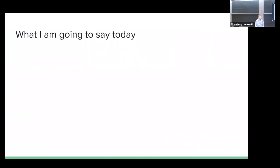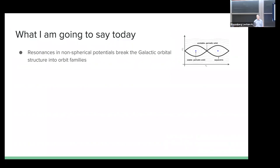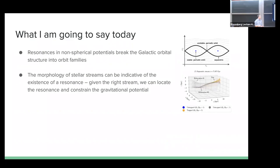I'll just dive right into it. I'm told it's good to tell people in advance what to expect, so you can leave right now if you don't like this. I will try to explain that resonances in non-spherical halos break up the galactic orbital structure into orbit families. I'll then explain that stellar streams - if you look at their morphology - can in theory detect the location and existence of these resonances, and using that, you can constrain the shape and characteristics of the galactic potential.